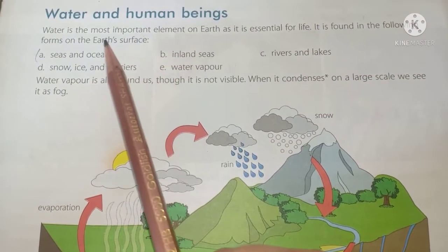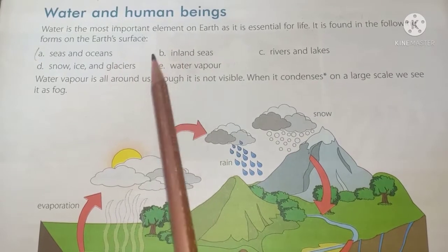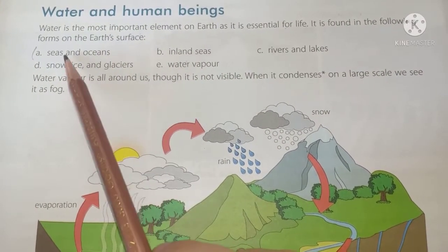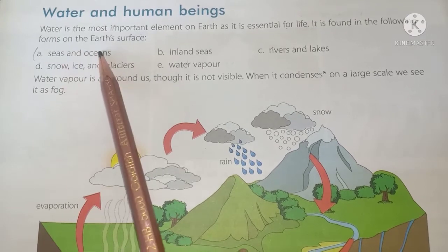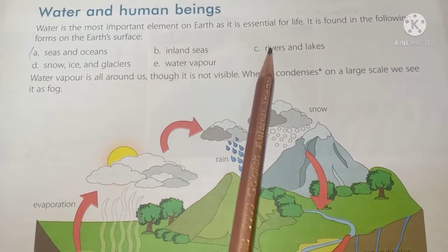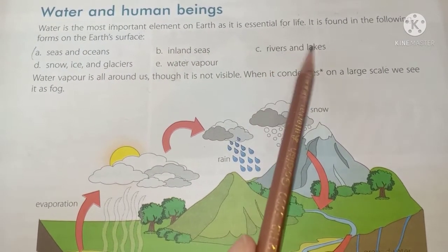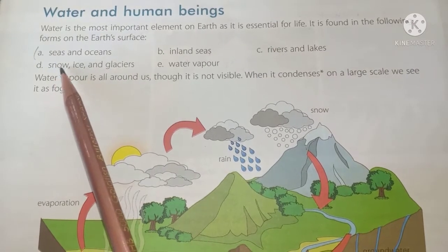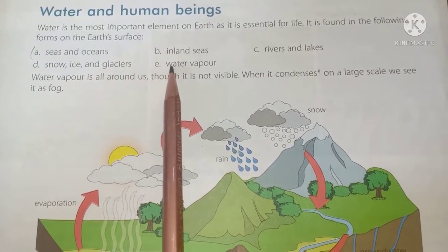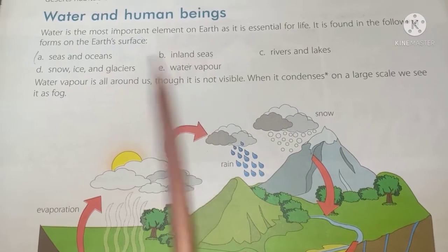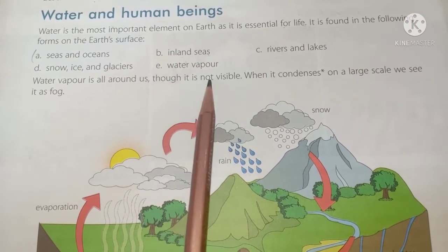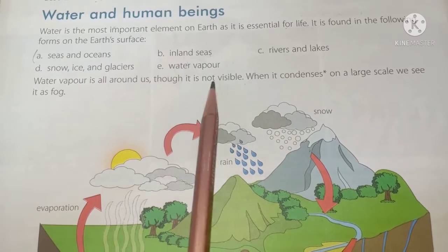Water is found in the following forms on the Earth's surface. The first one is seas and oceans, second one is inland seas, third one is rivers and lakes, next is snow, ice and glaciers, and the last one is in the form of water vapor.